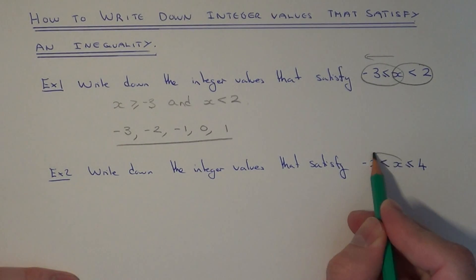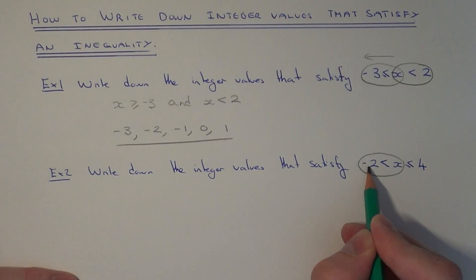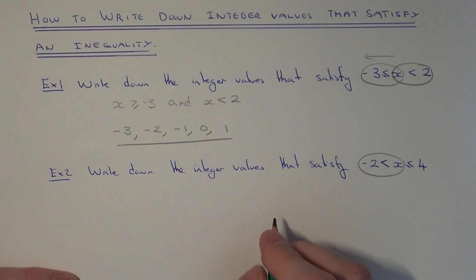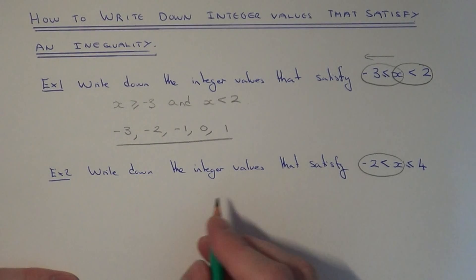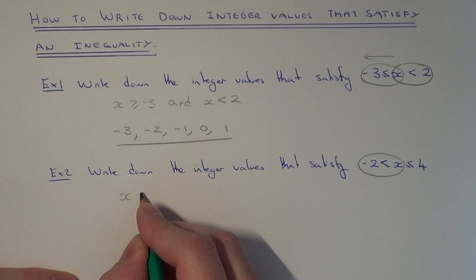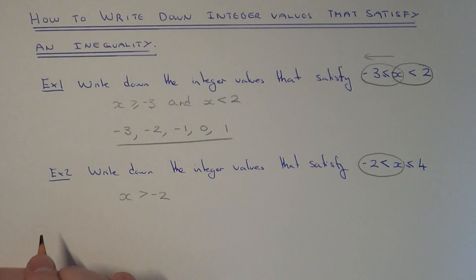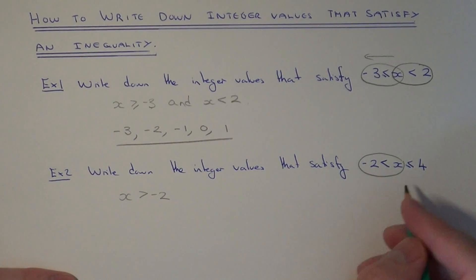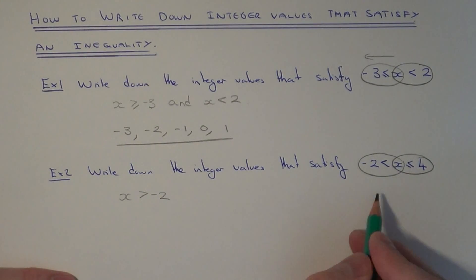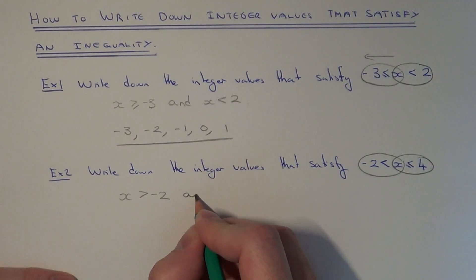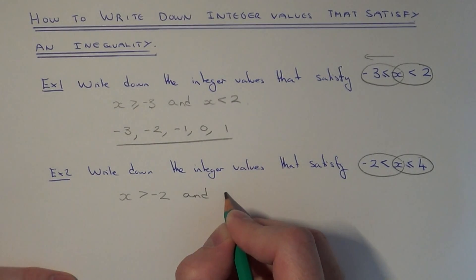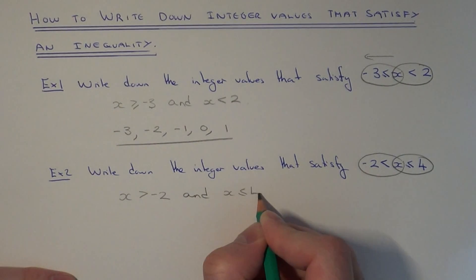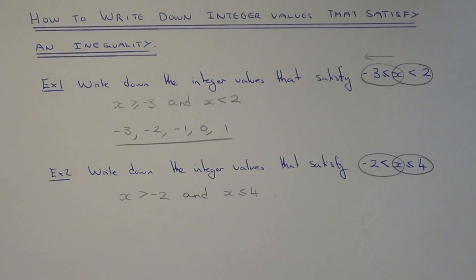Again, let's think about what this means. The first part of the inequality is minus 2 is less than x. If you write this the other way around as x is more than minus 2, this makes more sense than having it as minus 2 is less than x. And then the other part of the inequality is x has to be less than or equal to 4. So we're looking for the values of x which are more than minus 2 and less than or equal to 4.